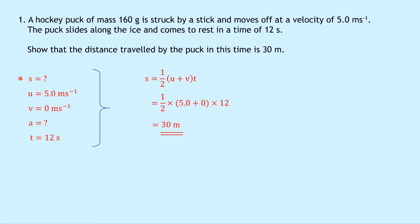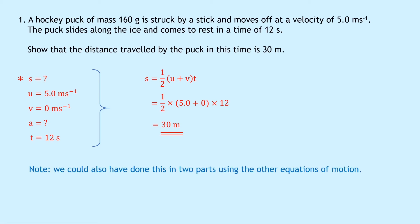Notice that this is a quick way of finding our answer because we didn't know the acceleration. Note that we could also have done this in two parts using the other equations. Specifically, we could have used v = u + at to find acceleration a first, then put that into s = ut + ½at² to find s. But using this equation in this specific case has cut down some work, as we've only had to use one equation rather than two.